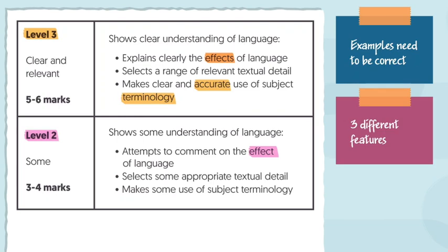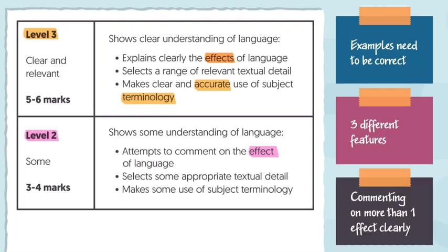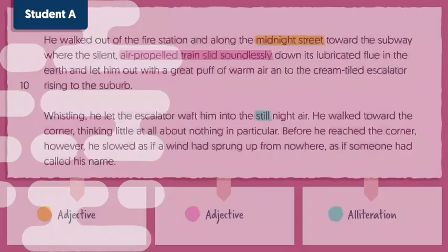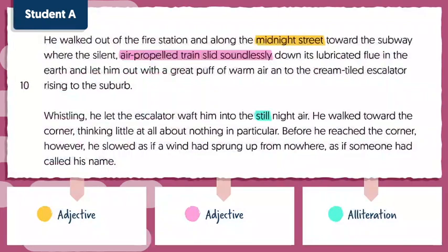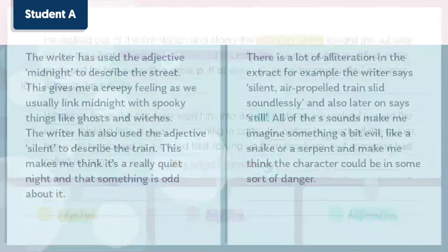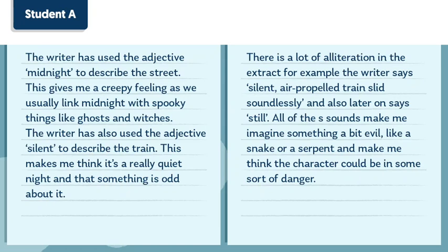If you work on three different features of language, even if you make a mistake or feel unsure on one of them, you still have a good chance at commenting on more than one effect clearly. Now, let's take a look at how Student A planned this question. Student A has highlighted some interesting words and phrases here, and made a note of what they're called using some of their key subject terminology — adjective and alliteration. Now let's take a look at how they've written up their answer. Press pause now to give yourself time to read it through, and then press play again when you're ready.